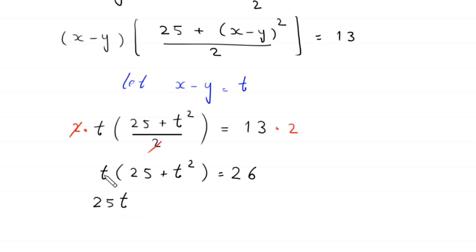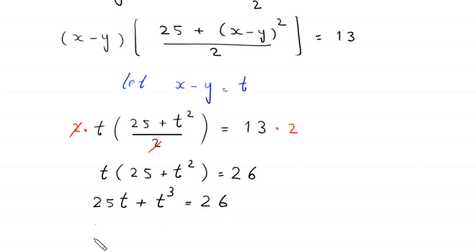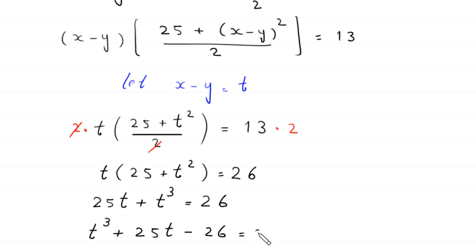We distribute t: t times 25 becomes 25t, and t times t squared becomes t cubed, so t cubed plus 25t equals 26. Rearranging and moving 26 to the left-hand side, this becomes t cubed plus 25t minus 26 equals 0.